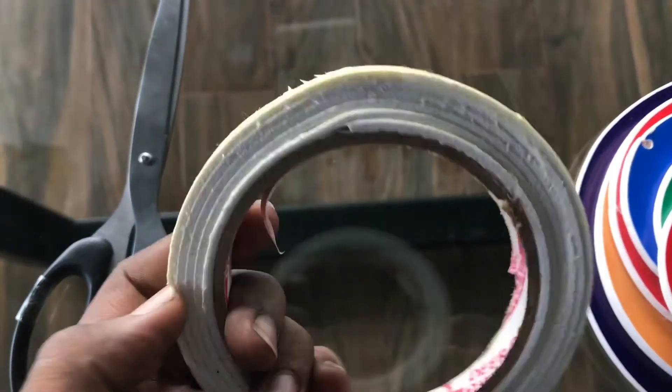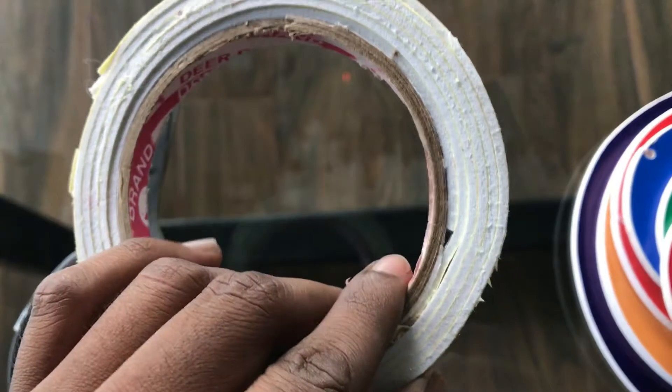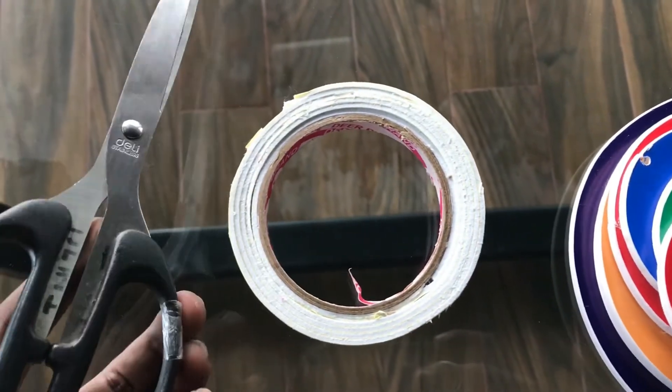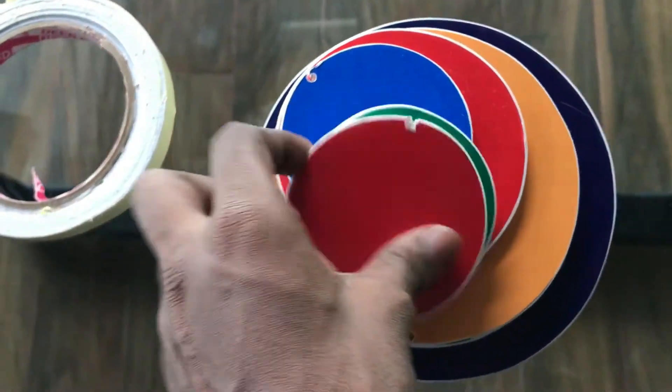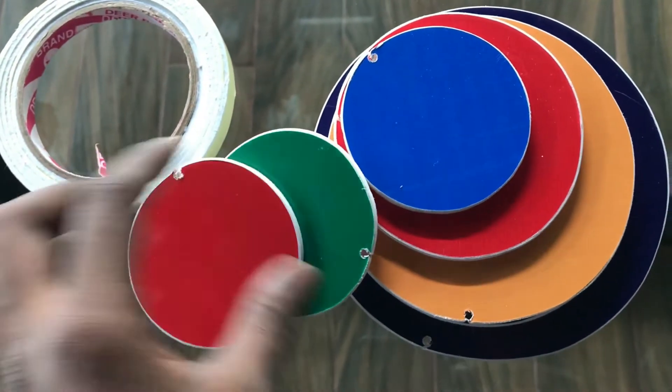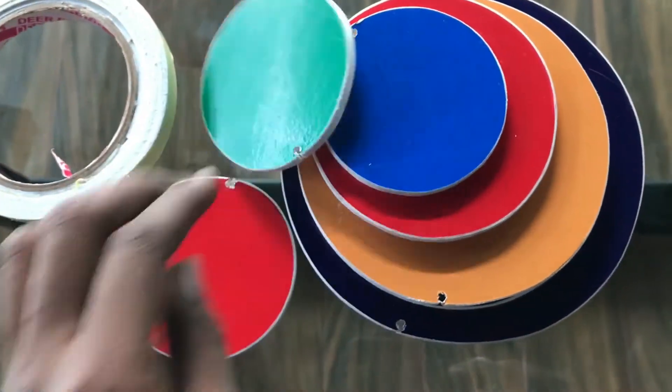So here I'm going to use this wall tape, it's actually a very strong one, scissors, and my materials - the circles. I have got a few to show you some ideas. Let's get it.